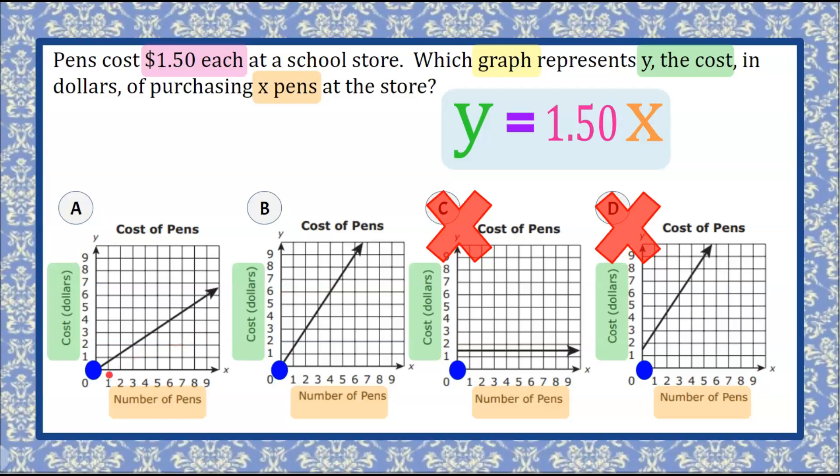If I go to one pen on graph A and go up to the line, that's going to be less than a dollar. Let's look at graph B. If I go up from one pen to the line, that's going to be approximately $1.50. That's what it looks like on the graph.